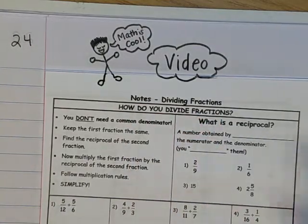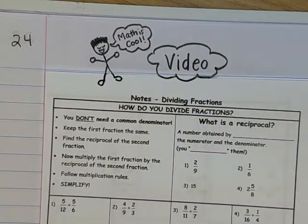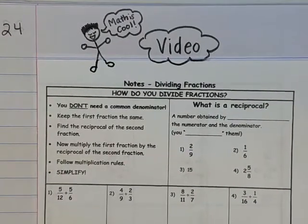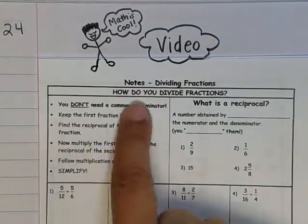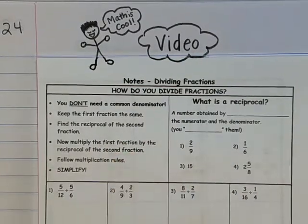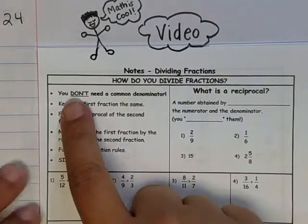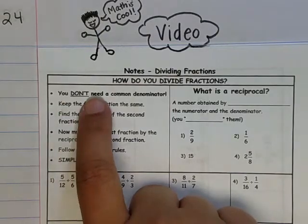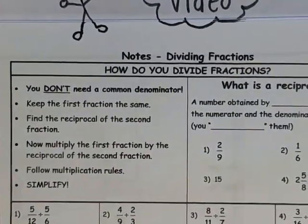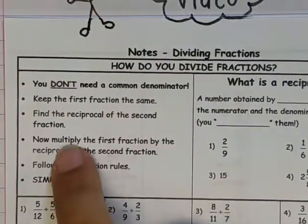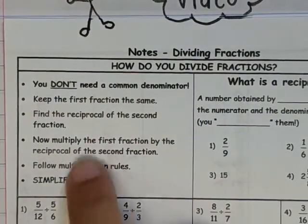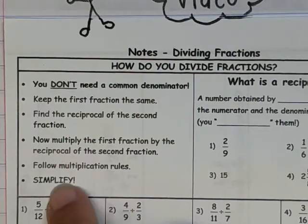With dividing by fractions, you can actually divide across just like you multiply across, but sometimes that doesn't work out very nicely. So here are some steps for how to divide fractions: you don't need a common denominator, you keep the first fraction the same, you find the reciprocal of the second fraction, you multiply the first fraction by the reciprocal of the second fraction, and then follow your multiplication rules and simplify.